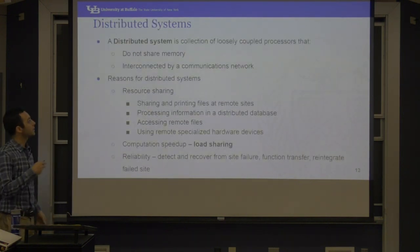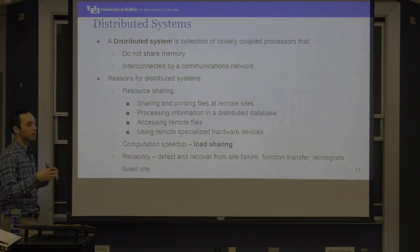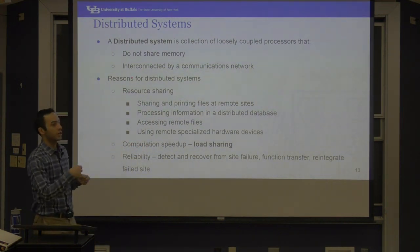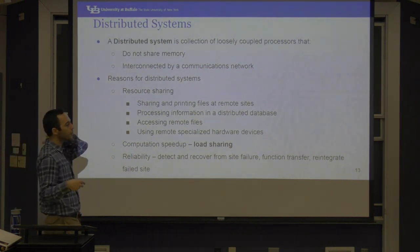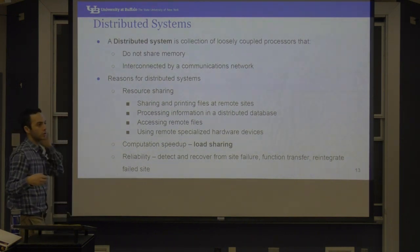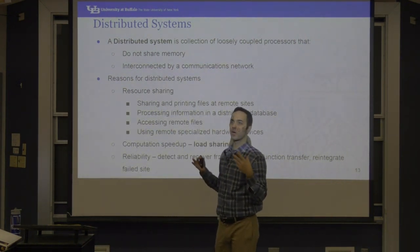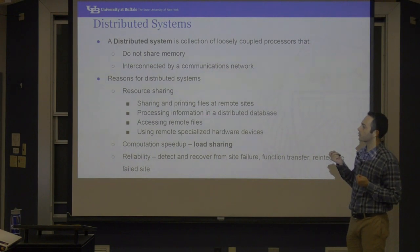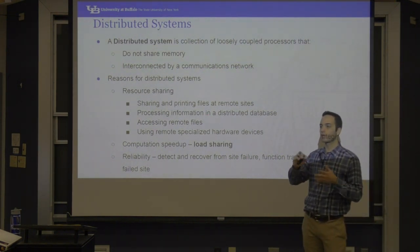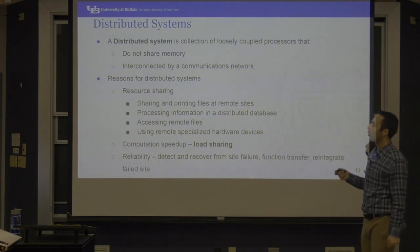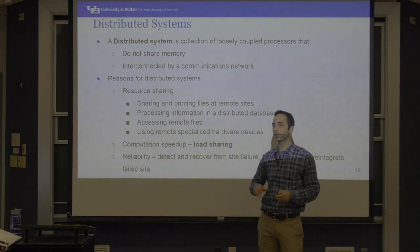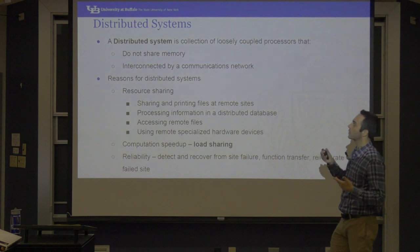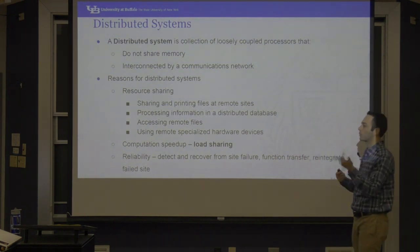Let's move on to distributed systems. A distributed system is a collection of loosely coupled processes — unlike tightly coupled processes sharing memory, these communicate over a network. Reasons for distributed systems include resource sharing, speeding up processes, increasing data capacity, adding redundancy, accessing remote files, and using remote specialized hardware. For example, if there's a special server at a different university with unique equipment, distributed systems allow you to work with it seamlessly as if it were local.